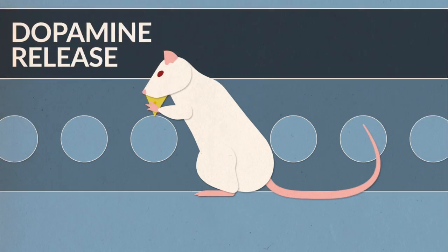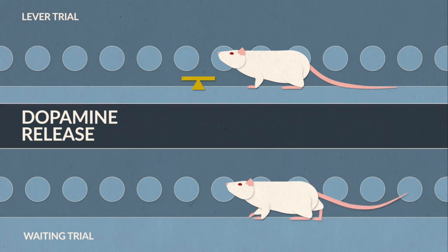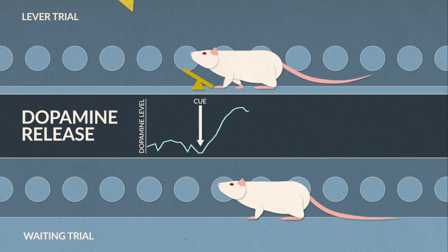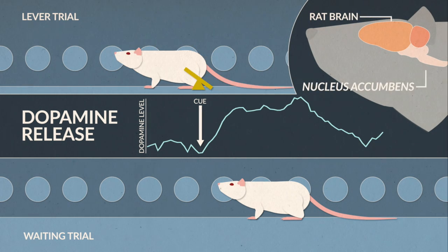We recorded dopamine release while the rats were either staying or going towards the lever. When rats hear the cue to go to the lever, dopamine release is immediately increased in a part of the brain called the nucleus accumbens. The bigger the reward they are expecting, the bigger the release.